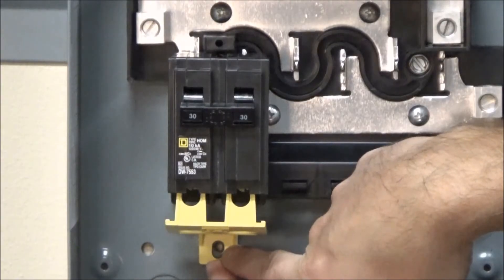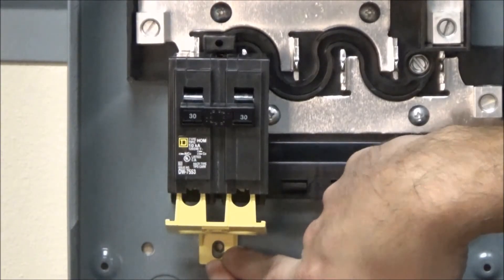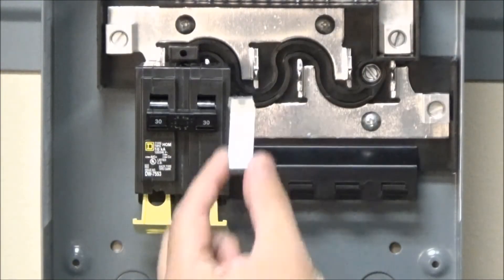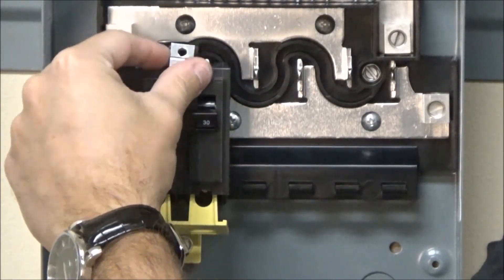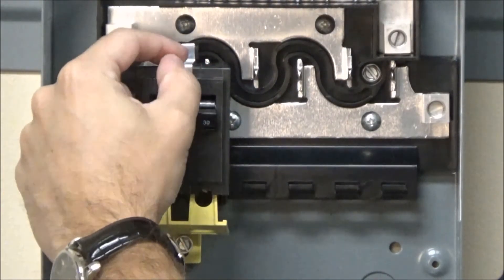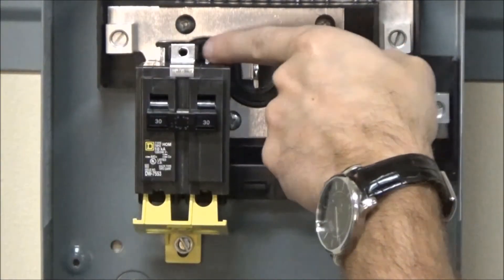The next step is to place the hold down bracket onto the backbed main circuit breaker and install the mounting screw into the plastic base.